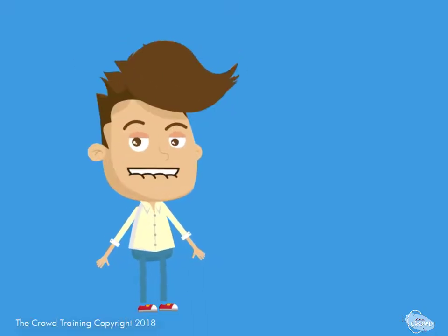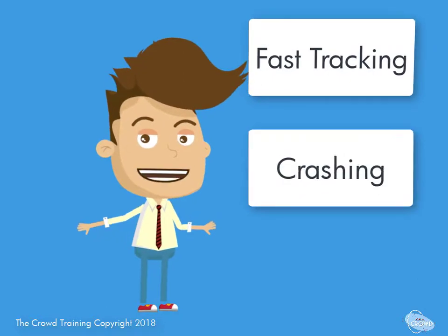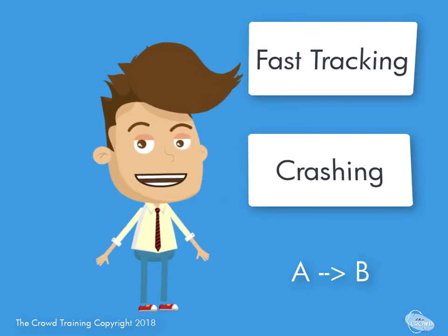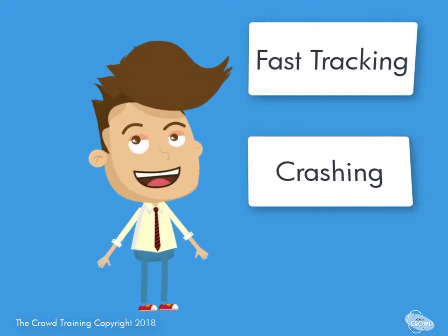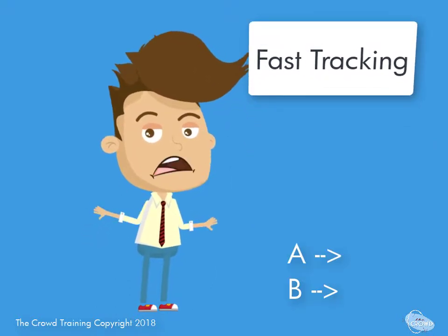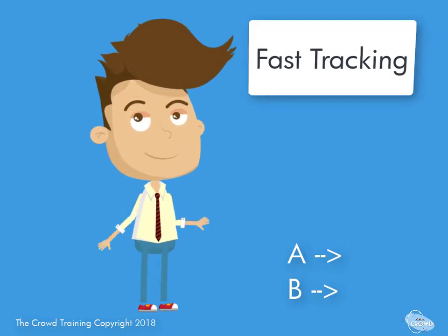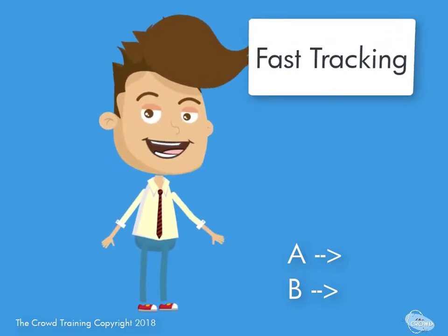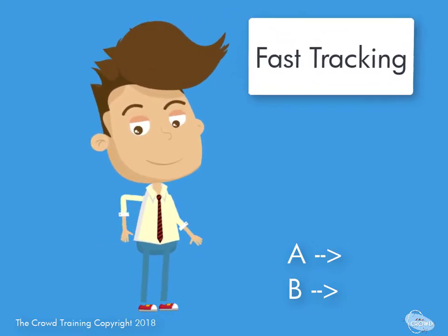When we refer to fast tracking and crashing, those are two techniques. We were supposed to do activity A and then activity B, but in this case we've decided that maybe they both happen at the same time, or we're going to start B just slightly before we were supposed to start A. So we would have two things happen almost concurrently or simultaneously.